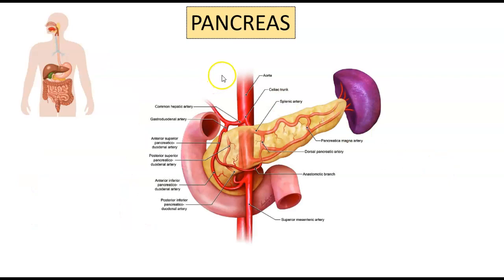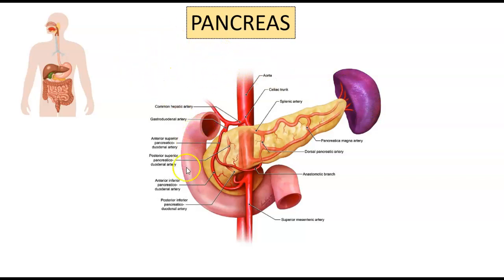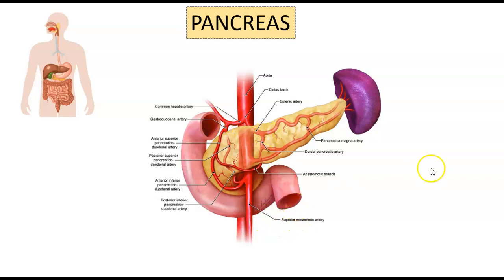Looking at the pancreatic blood supply, because of its close proximity to the spleen, liver, and duodenum, most of the blood supply originates from the celiac trunk and gives off a lot of collateral circulation via the hepatic artery, splenic artery, and superior mesenteric artery.